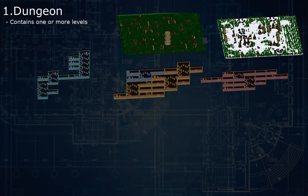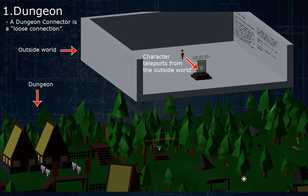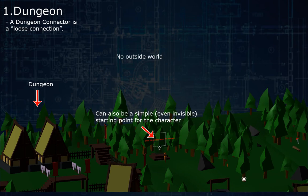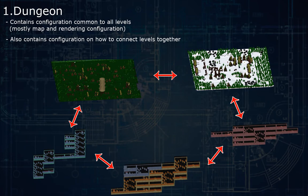The Dungeon is a collection of levels. It needs at least one unlocked entrance point, called a Dungeon Connector. This can be simply a starting point, or an actual path toward an outside world — this is a loose connection, meaning that this entrance will not be physically located near the outside world. You need a sort of teleport script to use this connector. If you don't have an outside world, then it's simply a starting point where the character will spawn at the beginning of the game. The Dungeon also contains configuration common to all its levels, and configuration on how these levels connect together.